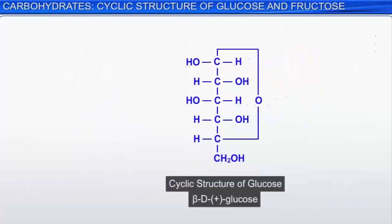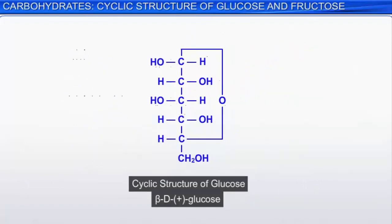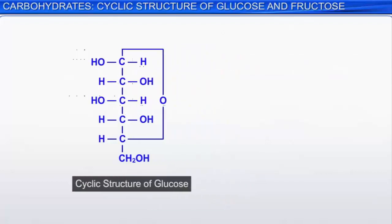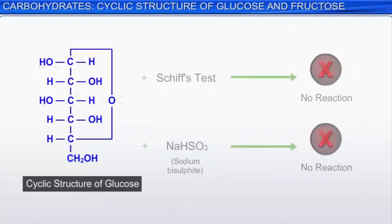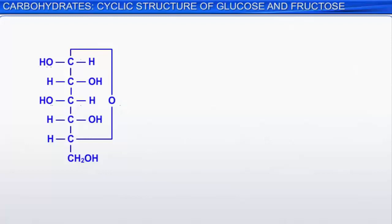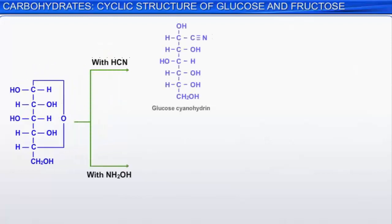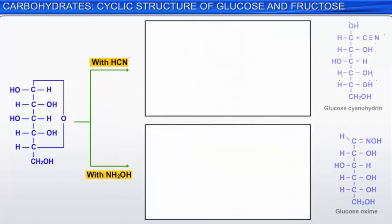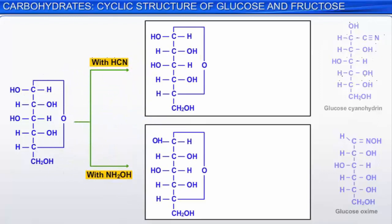The work done by many chemists helped establish the cyclic structure of glucose. It accounts for all the objections against the open chain structure, since the ring structure has no free aldehydic group. Glucose does not respond to certain characteristic tests of aldehydes like Schiff's test and addition reaction with sodium bisulfite. On the other hand, typical aldehydic reactions such as the formation of cyanohydrin and oxime, which involve the attack of HCN and NH2OH, are presumably due to the open chain structure of glucose formed by the opening of the ring when these strong reagents attack it.